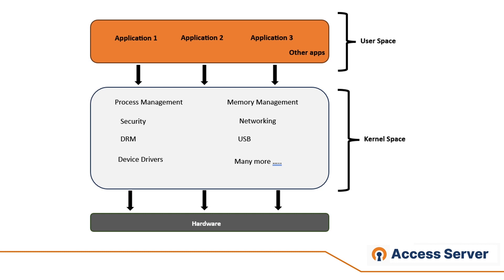On the other hand, user space refers to the memory area where application software and some drivers execute. When you run an application like a web browser, text editor, or a game, it is executed in user space. User space applications have restricted access to memory and must make system calls to the kernel in order to perform lower-level tasks that interact with the hardware. This ensures that user applications cannot interfere directly with the core of the operating system, helping the system maintain stability and security.